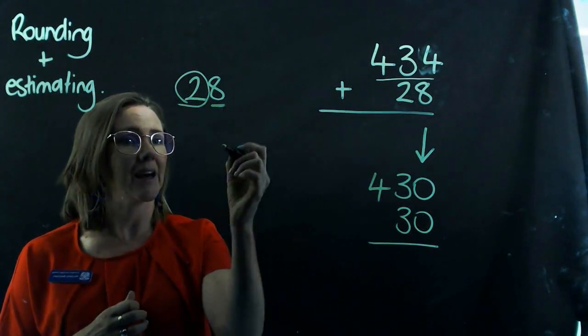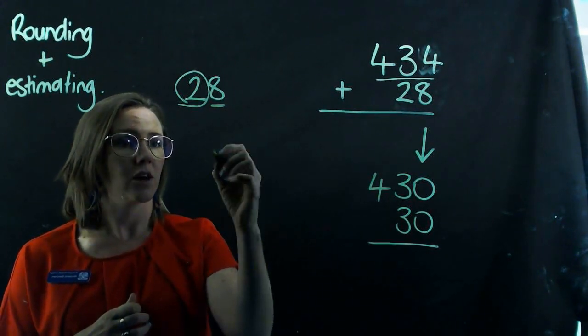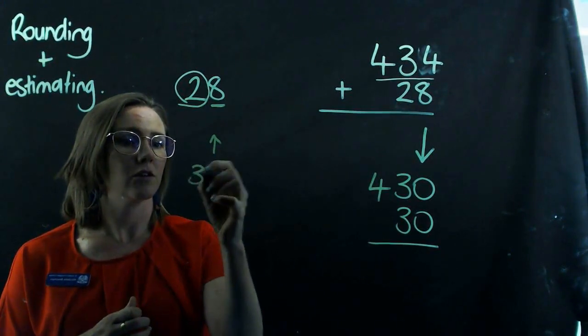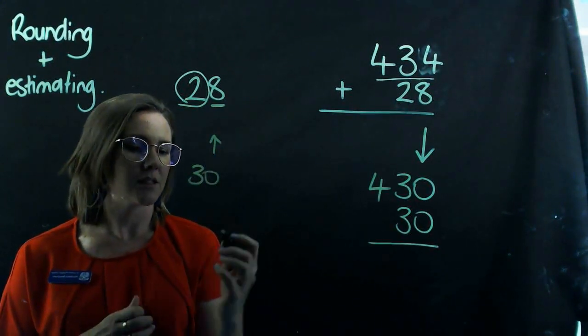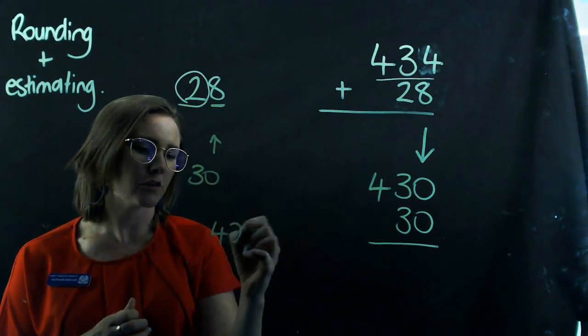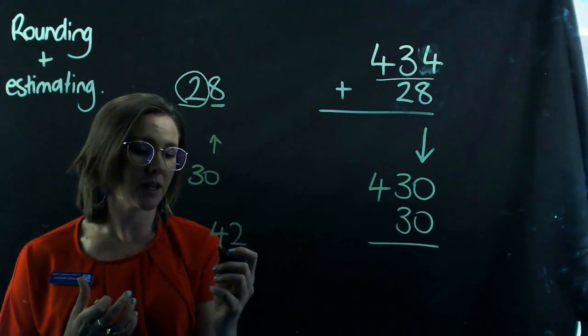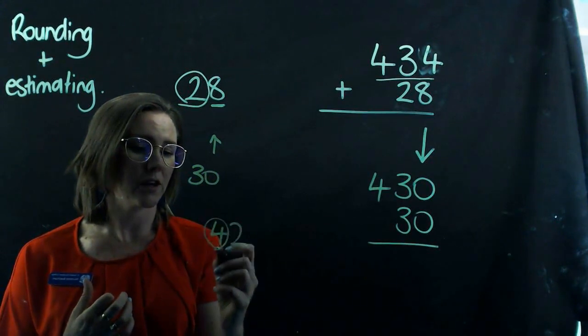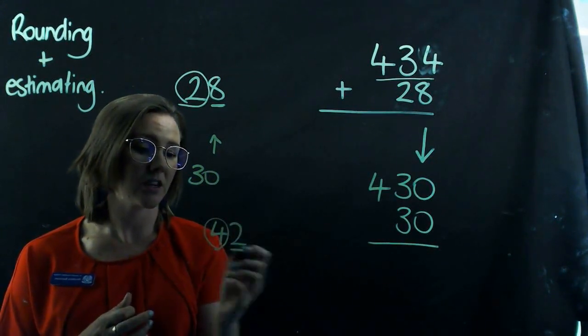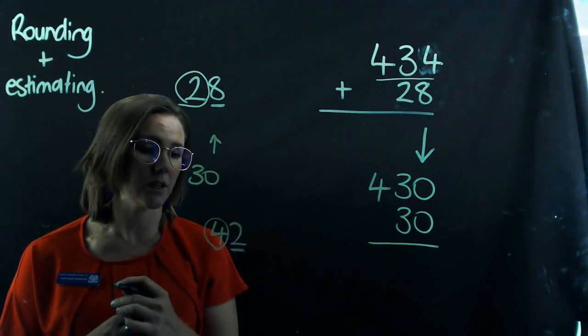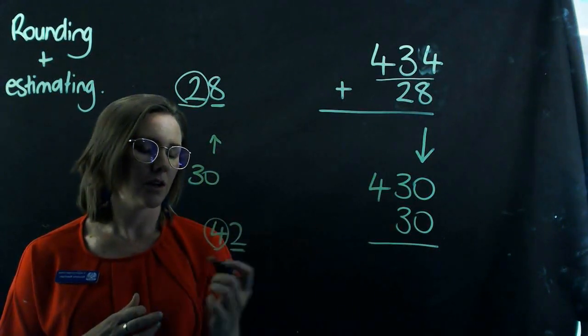So because it is an eight, it's five or above, I'm going to round it up to 30. Say if I had 42, for example, and I've been asked to round it to the nearest 10, then I'm looking at the four as the tens place, but I need to check the ones column to work out what to do.